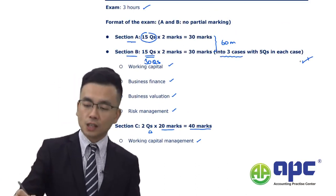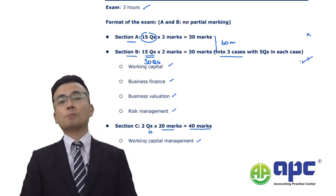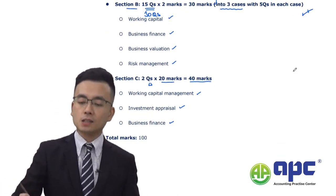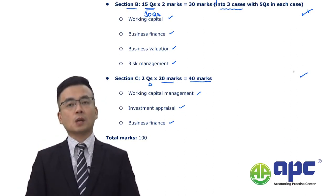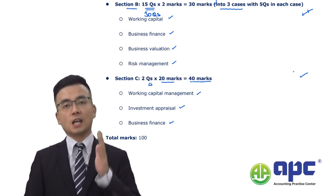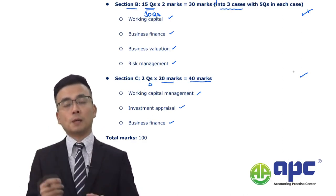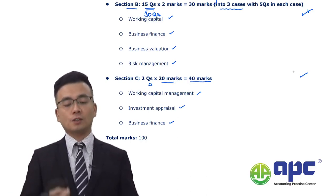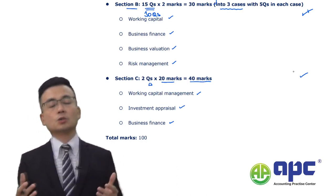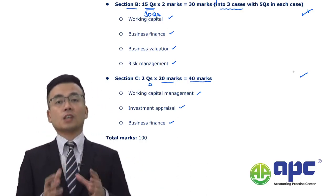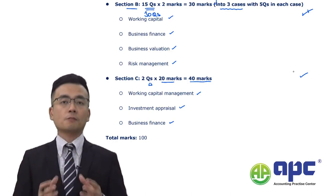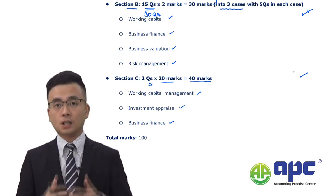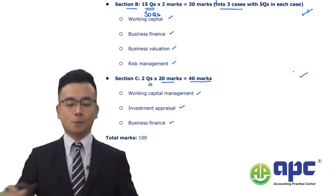Section B will be relatively straightforward. Section A will be the most difficult because you don't know what questions may come up. However, Section C is the easiest part of your FM exam. Make sure you practise enough past exam questions for Section C especially, as you'll get very similar questions. In this course, I will be summarising the Section C questions and developing my own answers so you can learn pre-prepared answers to apply in your actual exam.